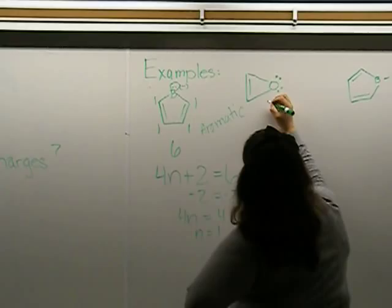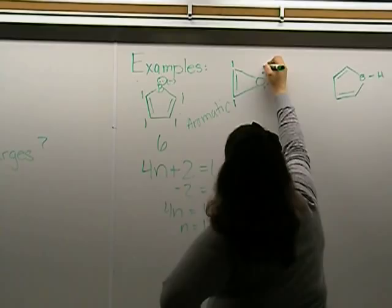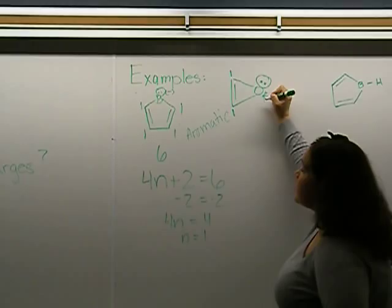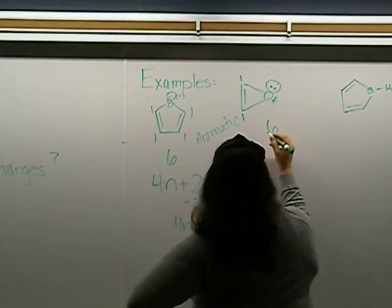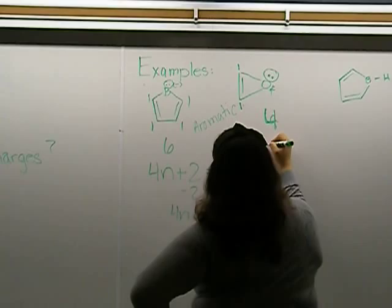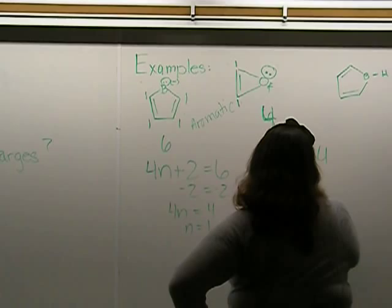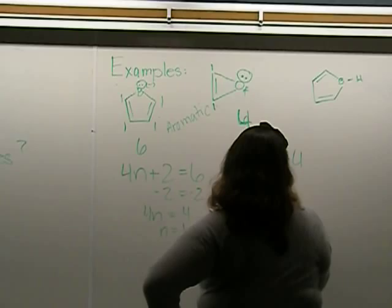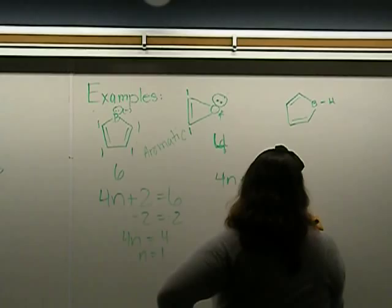What about this one? You've got 1 here, 1 here, and you only use 2 of the lone pair electrons, even though there's 3. So that exists. There's 6. No, there's 4. 1, 2, 3, 4. 4n plus 2 equals 4. So it does not, this is anti-aromatic.